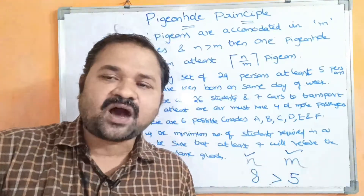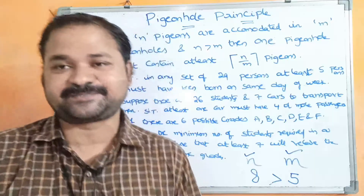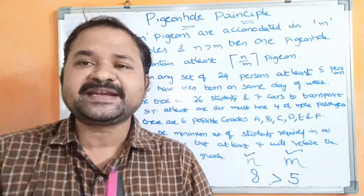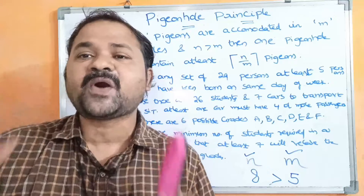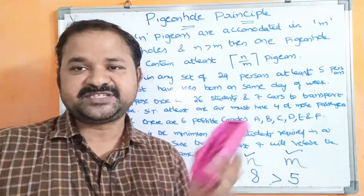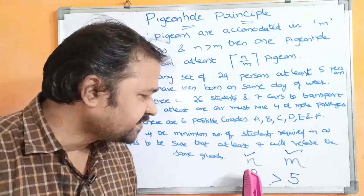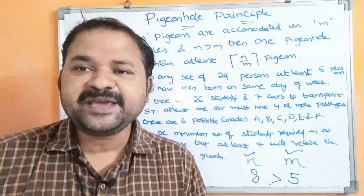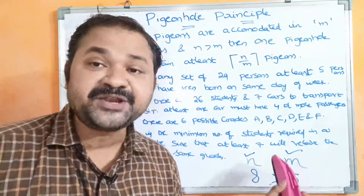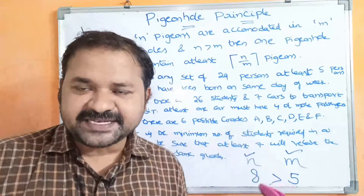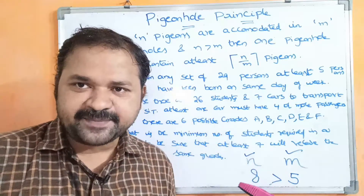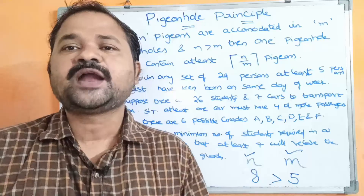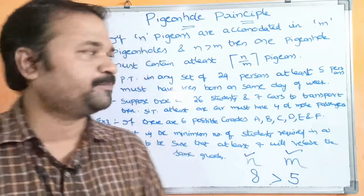Objects are placed in containers, so the number of objects should be greater than the number of containers. Likewise, the number of pigeons must be greater than the number of pigeonholes. Pigeons are represented by n, pigeonholes are represented by m, and n value should be greater than m.